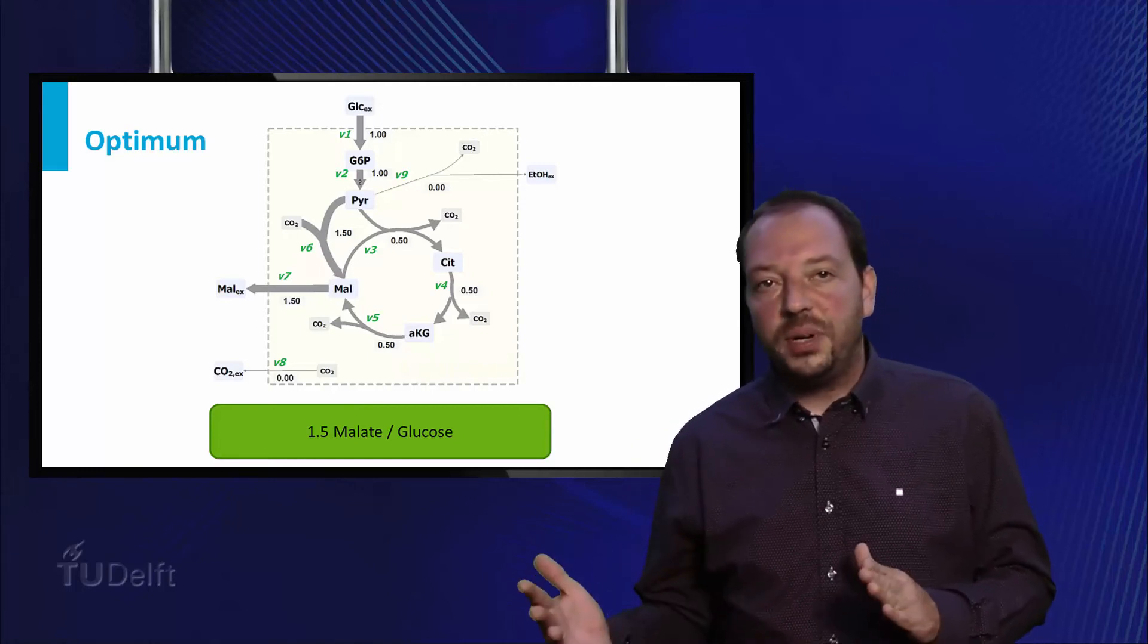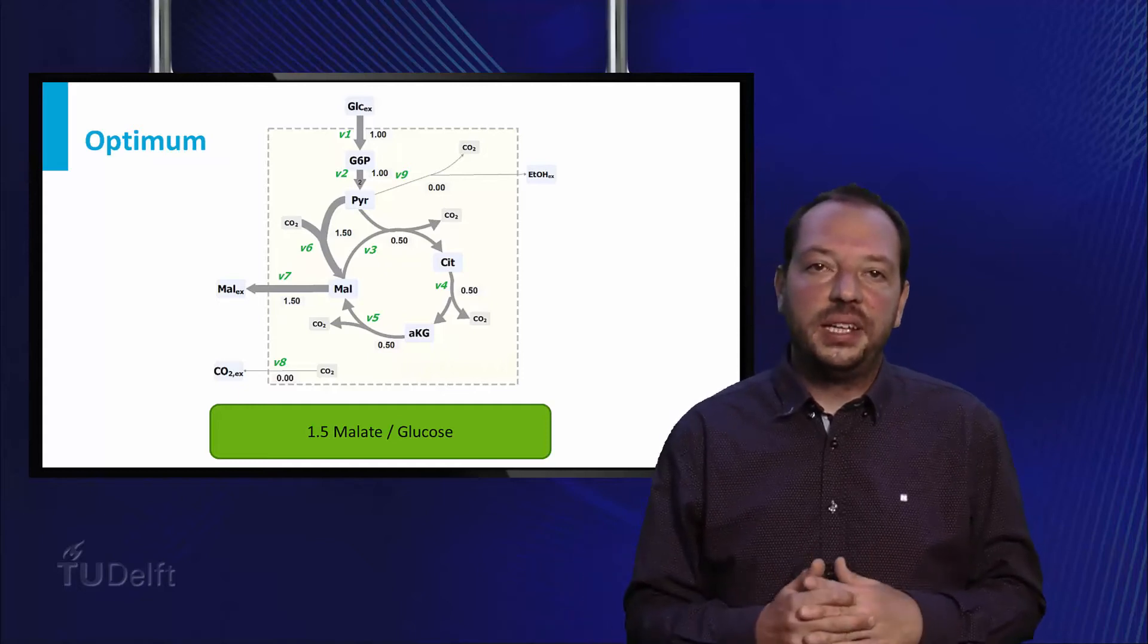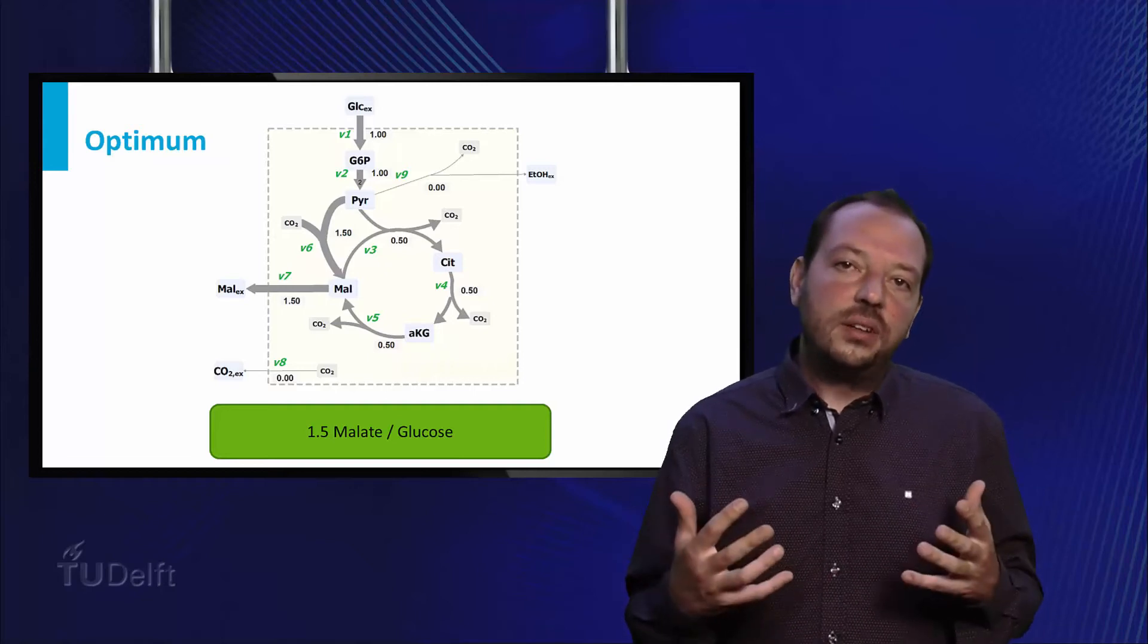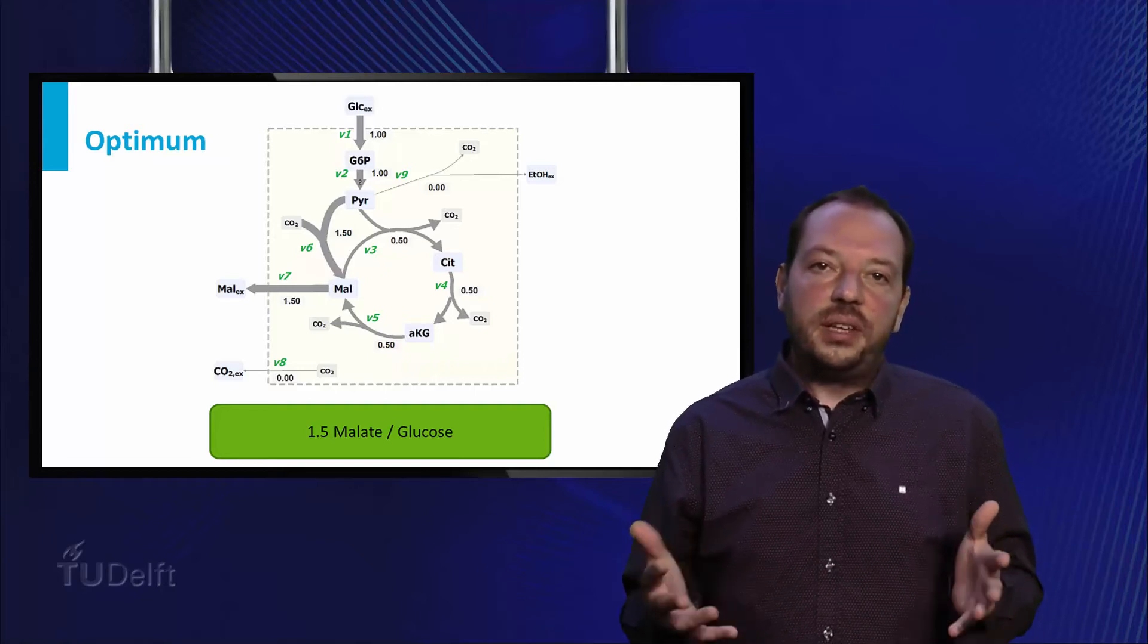Unfortunately, flux and expression levels do not directly correlate, as the enzyme kinetics also play an important role. Thus the first strain will probably not produce directly the maximum.